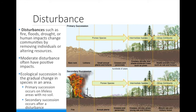A disturbance in a community is any event that changes the community by removing individuals. This could be things such as a fire, a flood, a hurricane, or even human activities. Most of the time we think of disturbances as a bad thing, but they can actually be good. New habitats can be created — for example, when a large tree is removed, more light is available to shorter, smaller trees and plants.